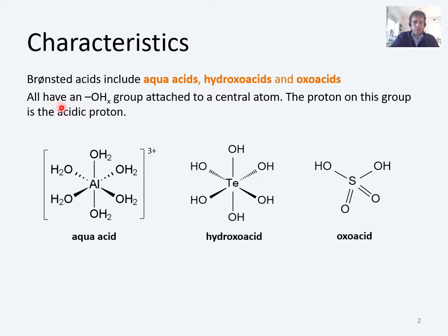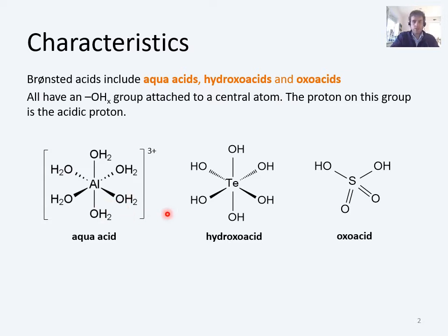The key point on this slide is that all of these different types of acids have this kind of OHX group attached to a central atom. The central atom in this case is aluminium, here it's vanadium, and here it is sulfur. Depending on what the group attached is, that will give us what type of acid it is. If X is equal to 2, then you have an aqua acid.